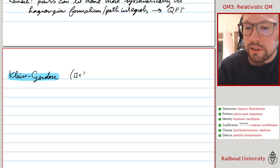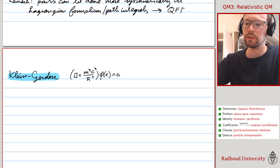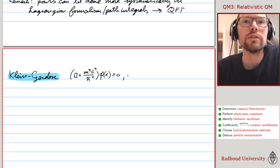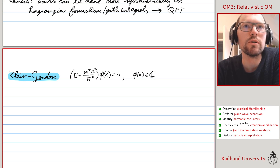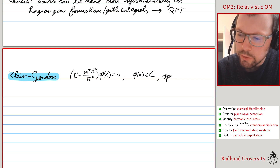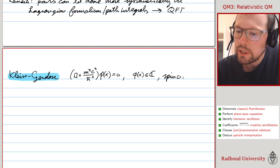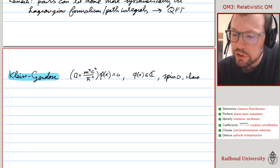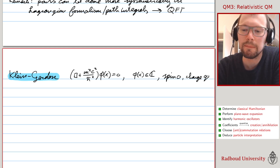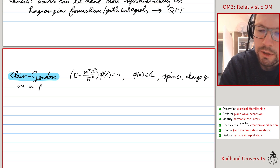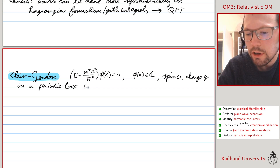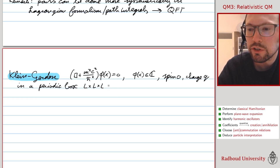Let's write down the Klein-Gordon equation again. We're looking at the single-component Klein-Gordon equation, which means at every spacetime point we have a complex value for the field. This describes spin-zero particles, and we can assign a charge q to these particles. Just like for the electromagnetic field, we can put it in a periodic box of dimensions L, with volume phi.